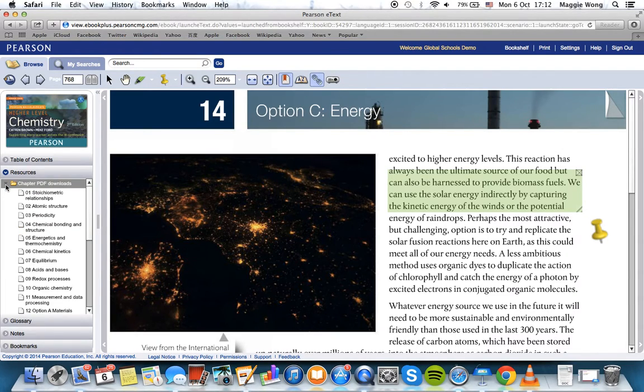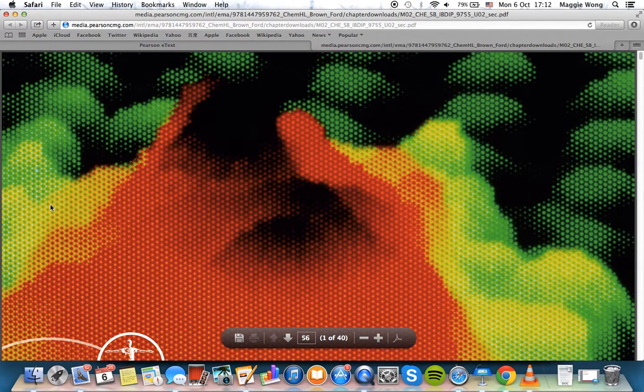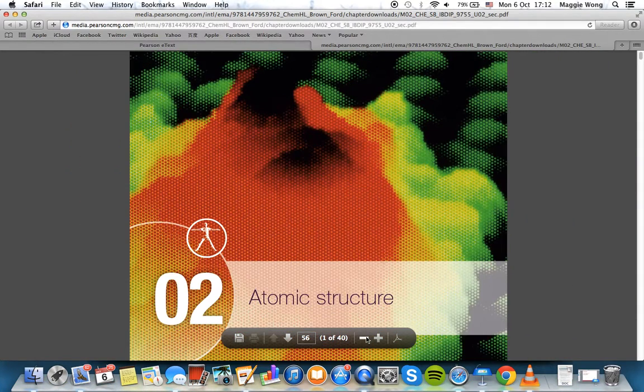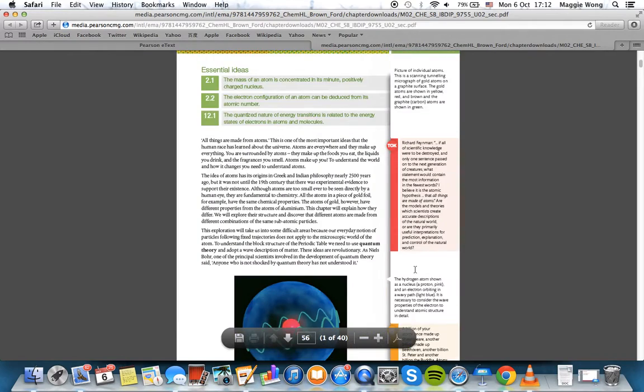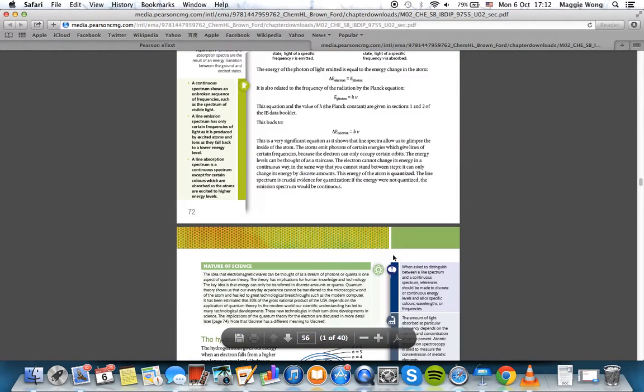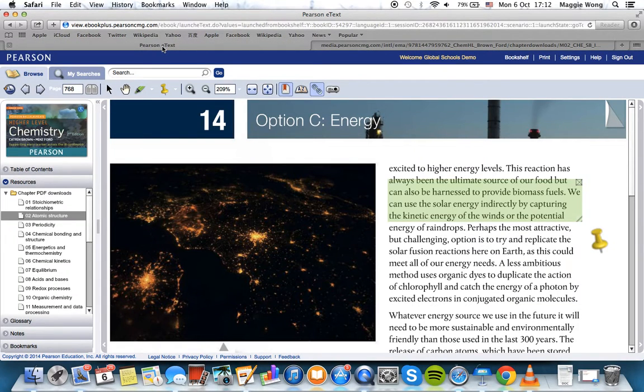The first folder here is the chapter PDF downloads. These are the PDF documents of the actual chapters. Students can access the core textbook content offline. As we know, this is important to many of you. So you'll see that this is the whole chapter in a PDF format. This means that students don't have to rely on the internet to go to the e-text.